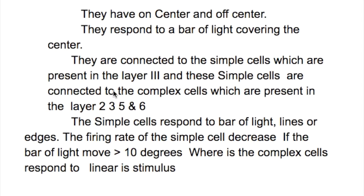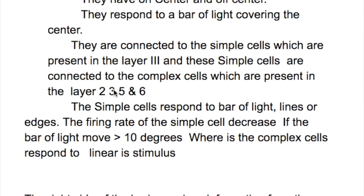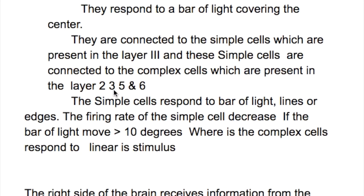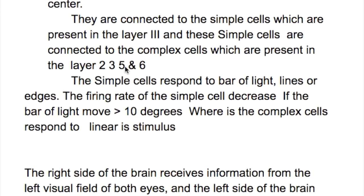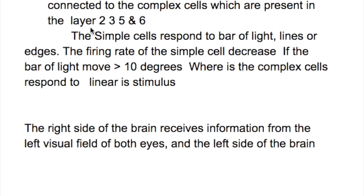How do the cells in the pyramidal layer function? Cells in pyramidal layer 4 of the visual cortex have on-center and off-center cells. They respond to a bar of light covering the center. These cells are connected to the simple cells present in layer 3, and these simple cells are connected to the complex cells present in layers 2, 3, 5, and 6.